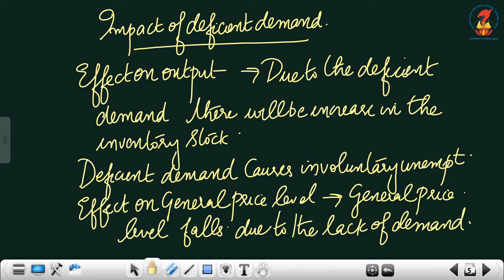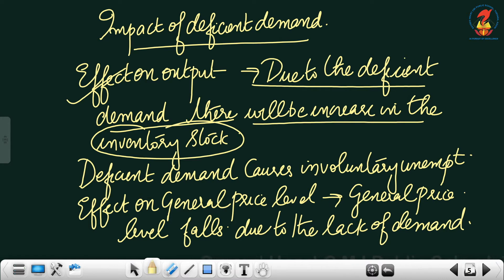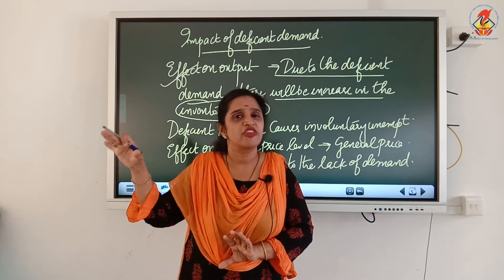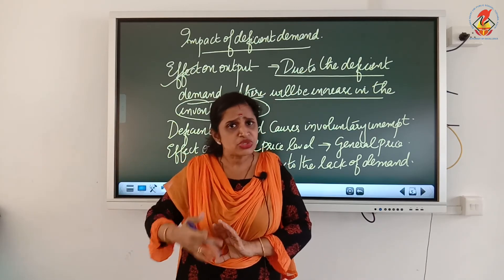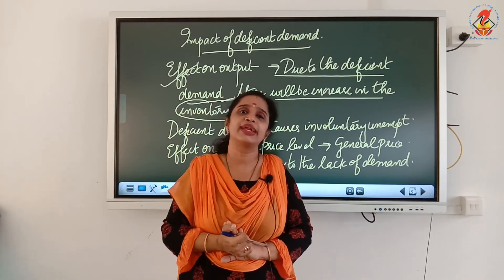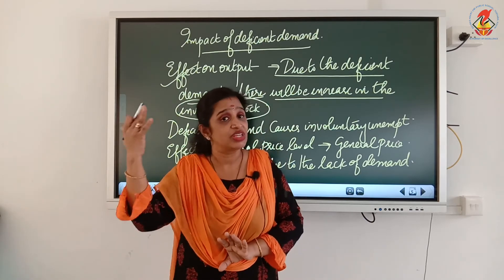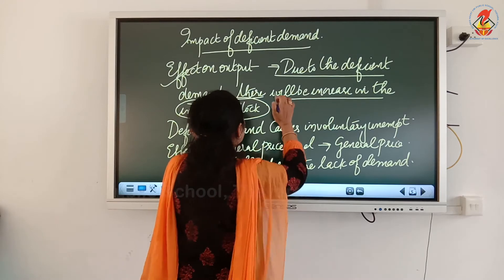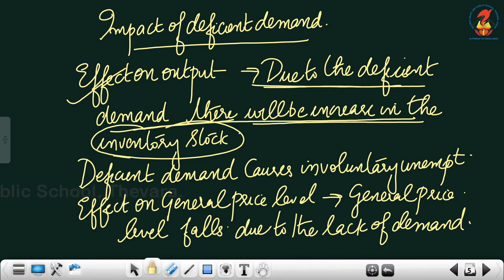Now the impact of deficient demand. Point one is the effect on output. Due to deficient demand, there will be an increase in inventory stock. If aggregate spending is less — if what consumers are planning to buy is less — whatever producers have produced will remain as inventory stock. The produced goods cannot move without aggregate demand, so deficient demand causes inventory to build up.